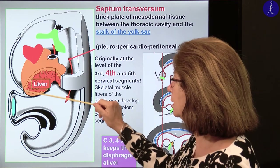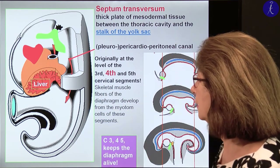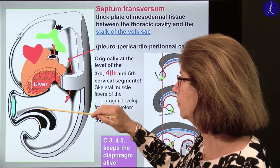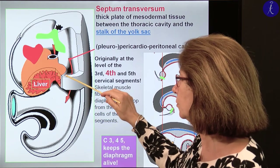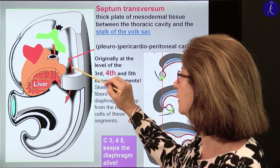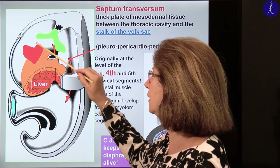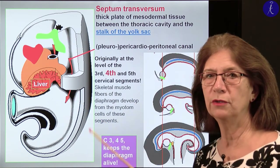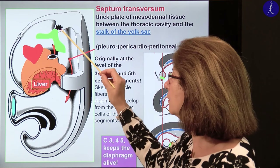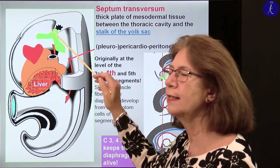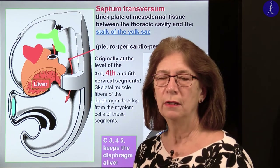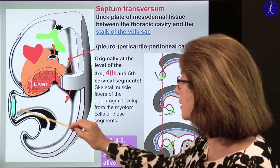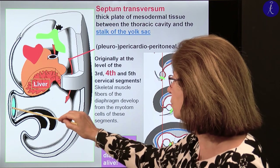Turning back to this territory, the septum transversum pushes from ventrally toward the dorsal body wall, but it wasn't closed perfectly. Above this territory the heart will develop, and from the foregut — as shown on the previous figure — the lung bud will start to grow out, divide, do its dichotomic divisions, and the lung will develop here. This territory is the stalk of the yolk sac, so the septum transversum is between the heart and the yolk sac stalk, now in the territory of the thoracic cavity.